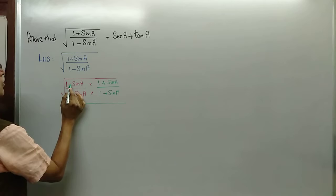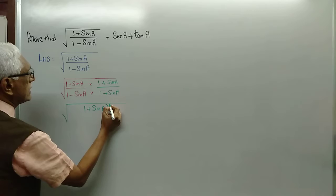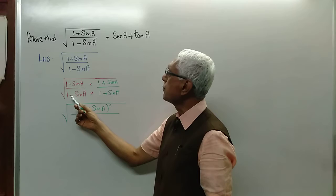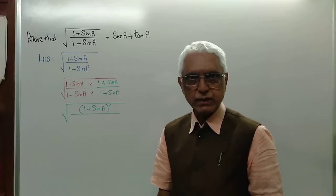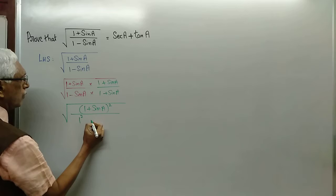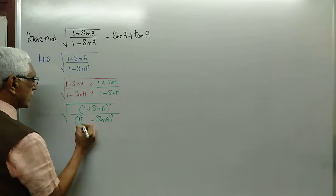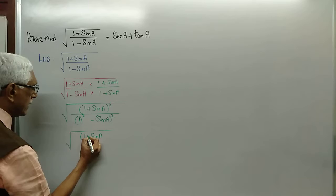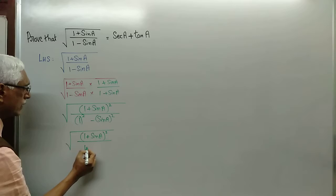It becomes (1 plus sin a) into (1 plus sin a), which is (1 plus sin a) whole square, divided by the denominator. Please watch — this is of the form (a plus b)(a minus b), an identity. You all know (a plus b)(a minus b) is a square minus b square. So this is nothing but 1 square minus sin a whole square.